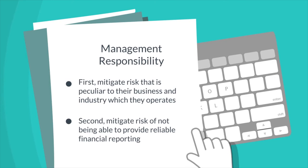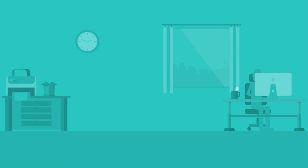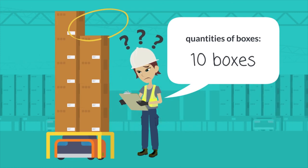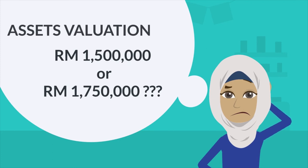Throughout the business processes, you need to acknowledge that it is management's responsibility, first, to mitigate risk peculiar to their business and the industry in which they operate, and second, to mitigate the risk of not being able to provide reliable financial reporting. Therefore, it is very important for management to have their own internal controls through the establishment of sound policies and procedures, and to implement these effectively and efficiently, or else the repercussions could be very severe. Examples include: a salesperson may overstate sales to improve the likelihood of receiving a bonus; employees in the receiving area may be too busy to accurately record delivery of inventory; and management may not have exercised appropriate judgment and may have overvalued its assets.